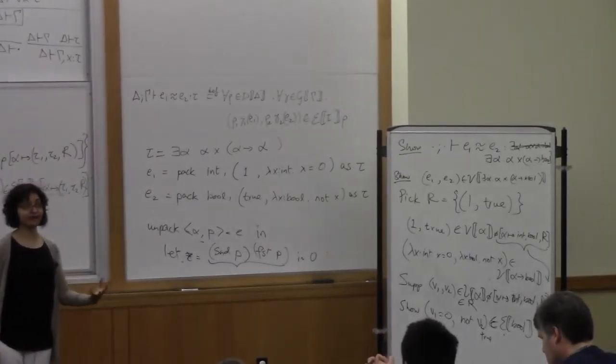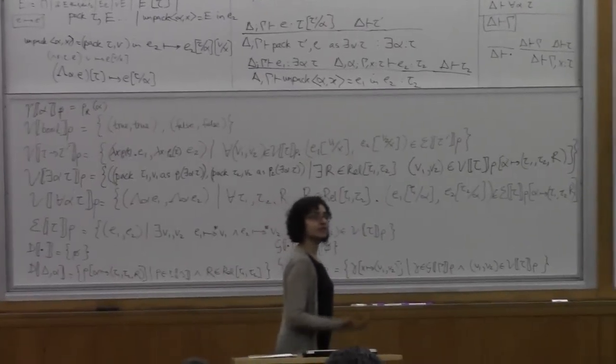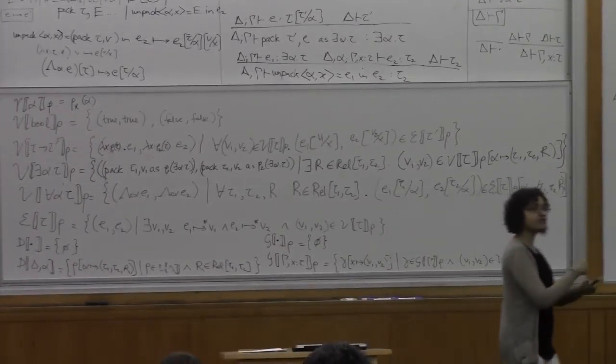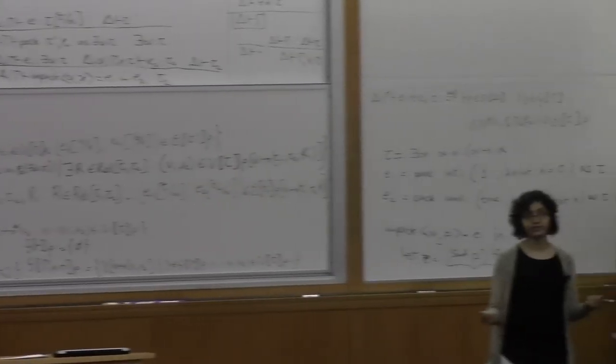It's just the power of parametricity. So we use the word parametricity when we're talking about universal types. And we use the word representation independence when we talk about existential types. But it's just a dual concept. Representation independence is a consequence of parametricity.